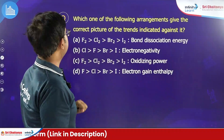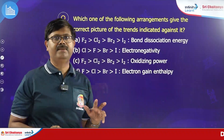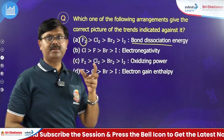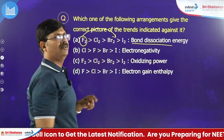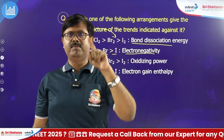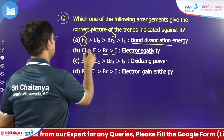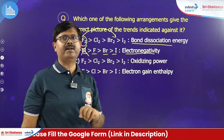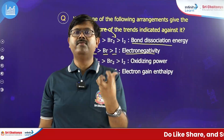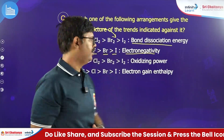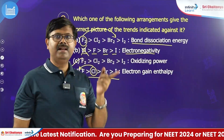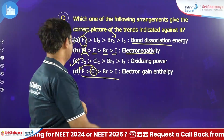Which arrangement gives the correct picture of the trends? First option — F2, Cl2, Br2, I2 in bond dissociation energy order — is wrong, because fluorine is not the strongest; it should be in third place. Second — electronegativity order starting with Cl — is wrong; fluorine is the highest electronegative element in the whole periodic table. Third — F2, Cl2, Br2, I2 in oxidizing power — yes, this is correct, because fluorine's reduction potential is very high, making it the best oxidizing agent, then Cl, Br, I. Fourth — electron gain enthalpy order F, Cl, Br, I — is wrong; Cl should occupy first place, then F, then Br, then I.